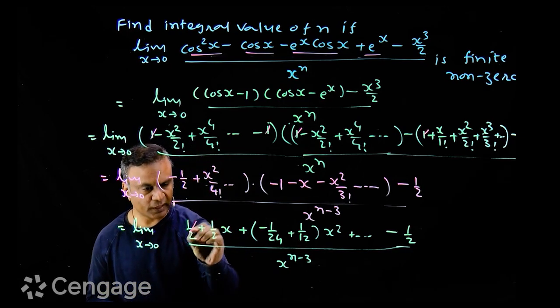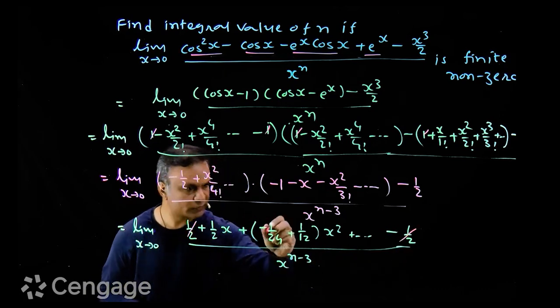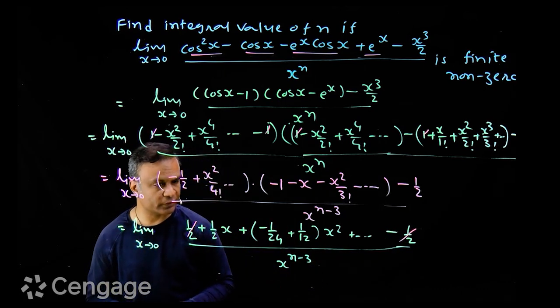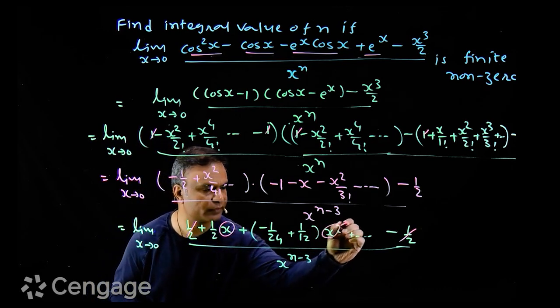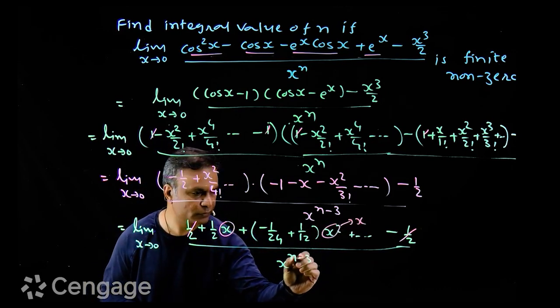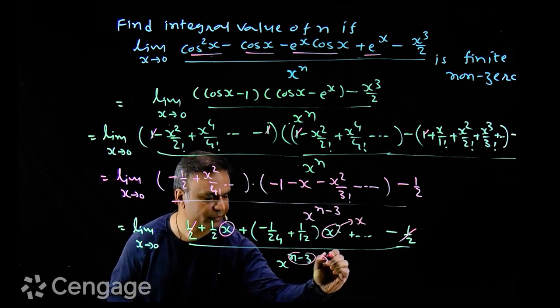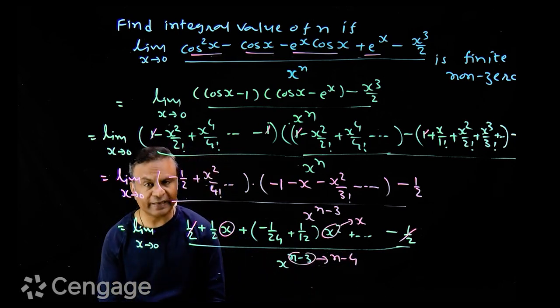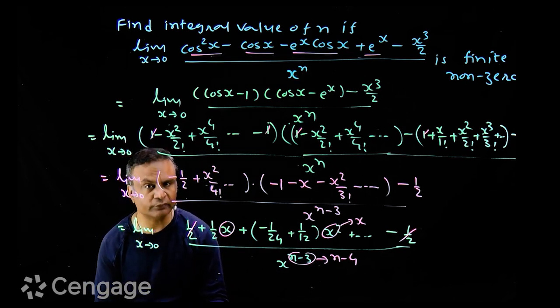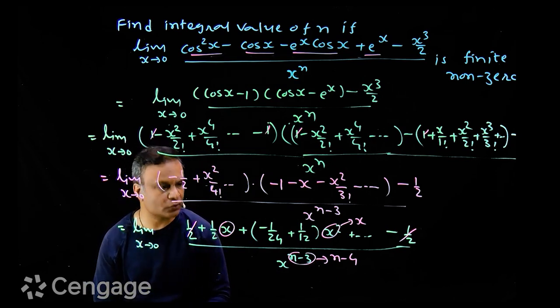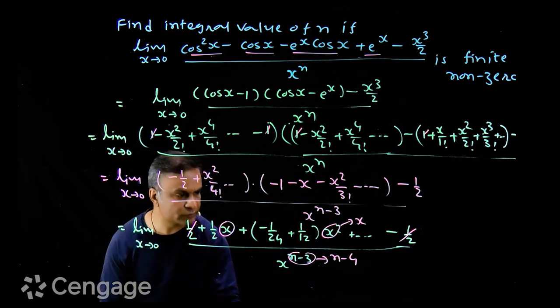Now in numerator, half gets cancelled out, then we can cancel out x from numerator and denominator. So here x goes, x square is replaced by x and n minus 3 is replaced by n minus 4. So now when x tends to zero, numerator value approaches to half, but the value of denominator depends on value of n minus 4.